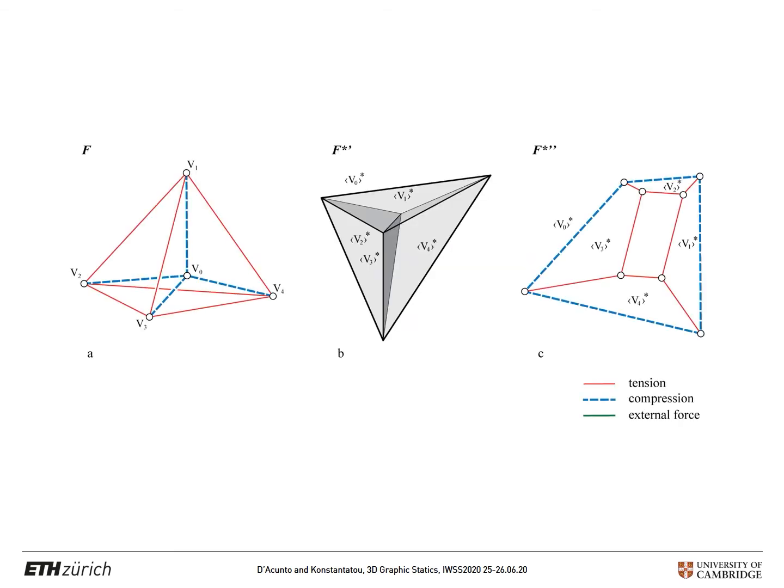In fact, for a given 3D form diagram, like the self-stressed tetrahedron that is depicted in this picture, two alternative versions of the force diagram can be constructed: the polyhedron-based and the vector-based.